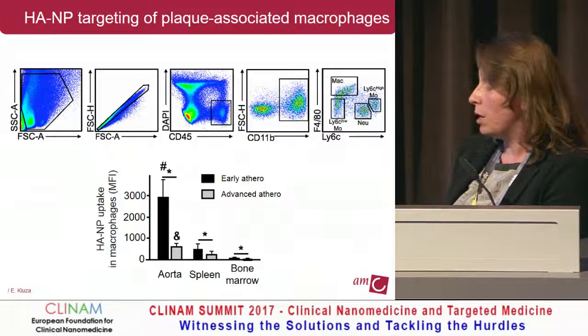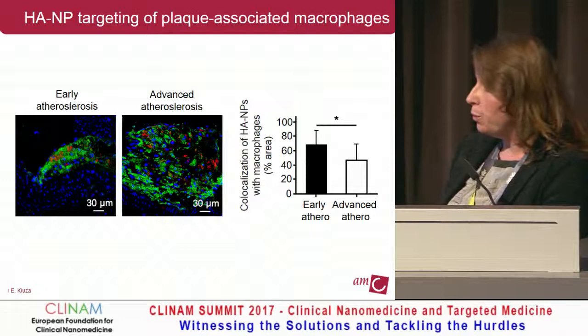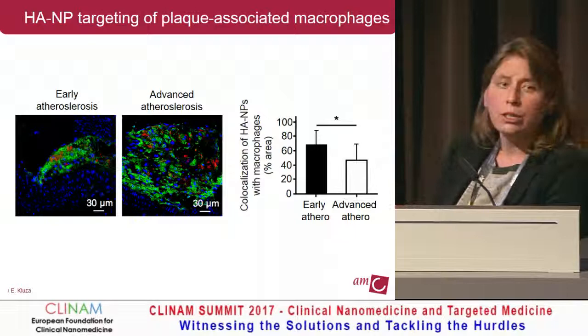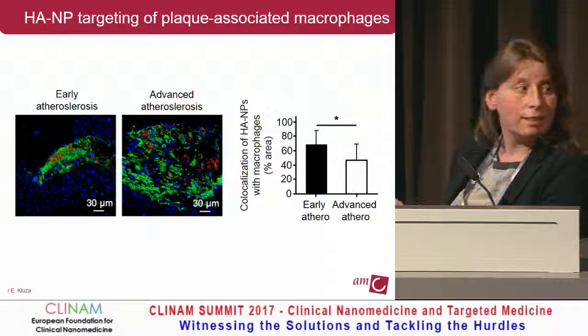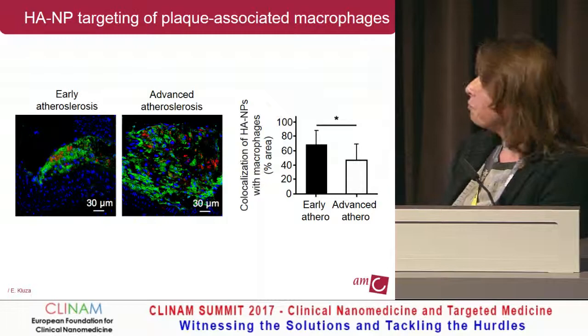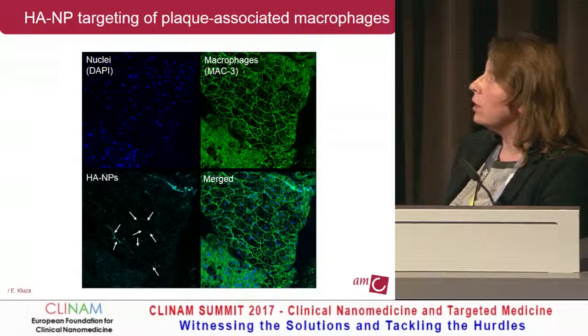This profile was confirmed by fluorescent microscopy. You can see small early lesions and advanced ones — macrophages in green, our nanoparticles in red. When we quantified the colocalization of nanoparticles with macrophages, selectivity is much higher in early atherosclerosis compared to advanced, where about 50% was actually not associated with macrophages. This partially explains what's happening.